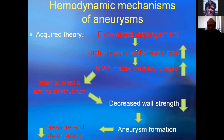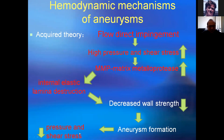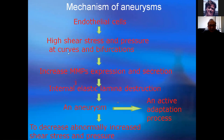Blood flow-directed impediment causes high pressure and high shear stress, leading to increased MMP — matrix metalloprotease. This MMP can destroy the internal elastic lamina, decreasing wall strength and causing aneurysm formation. Aneurysm formation leads to decreased pressure and shear stress. When endothelial cells feel high shear stress or high pressure at a curve or bifurcation wall, MMP expression and secretion increases, leading to internal elastic lamina destruction and aneurysm formation. This is an active adaptation process, not a passive one.